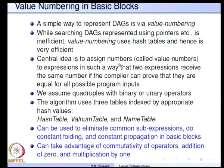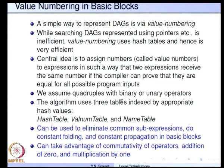What we really do is assign numbers to expressions in such a way that two expressions receive the same number if the compiler can prove that they are equal for all possible program inputs. We use hashing techniques in this value numbering optimization, and we assume that there are quadruples with binary or unary operators. There are three tables: hash table, value number table, and name table. The value numbering technique can be used to eliminate common sub-expressions, do constant folding, and constant propagation in basic blocks.